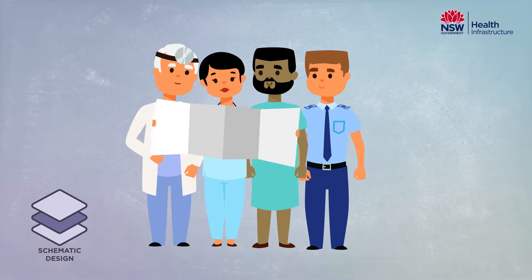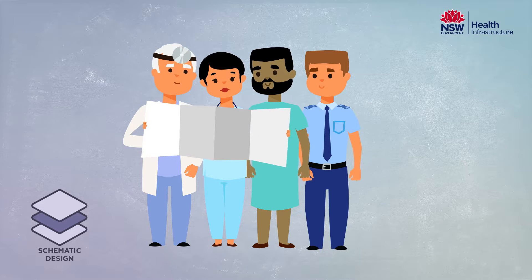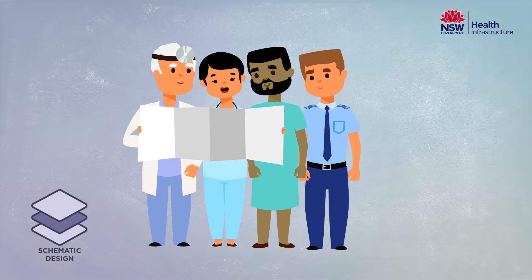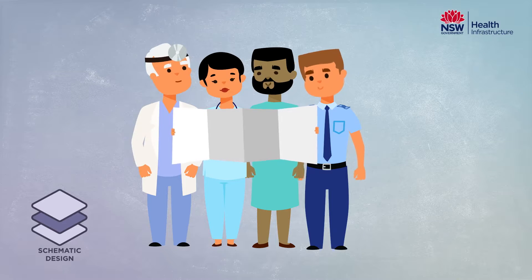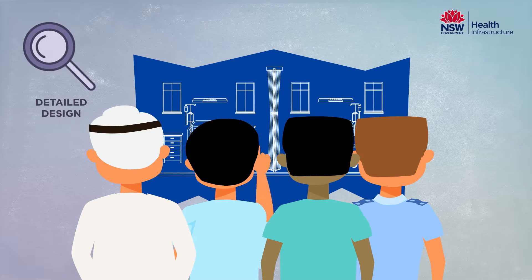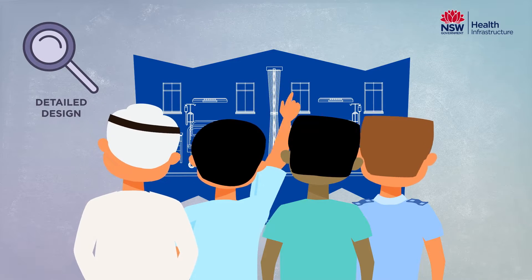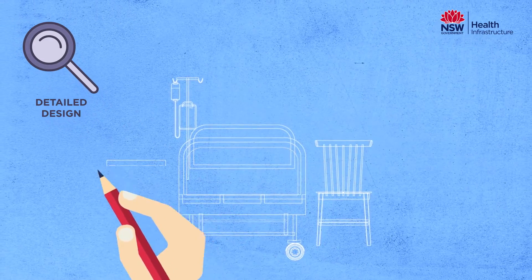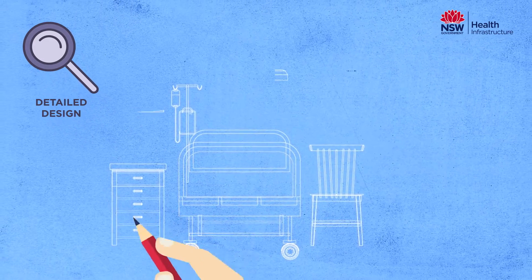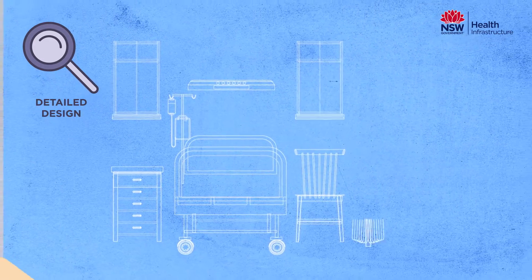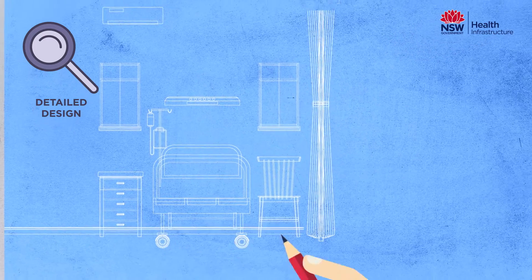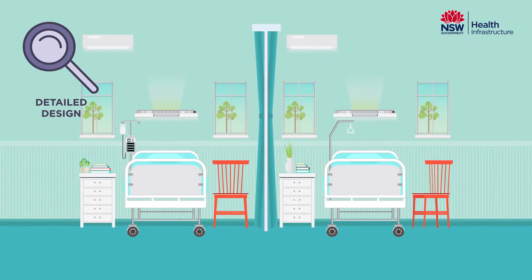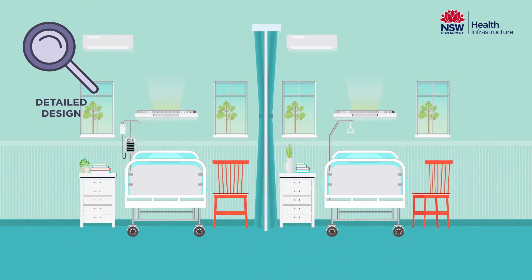Once schematic design is complete and reviewed by the project user groups, the redevelopment moves into the detailed design phase. During detailed design, the user groups look at the layout of every room and hospital space, such as the location of furniture, fittings and room colours, as well as the external facade and outside spaces.